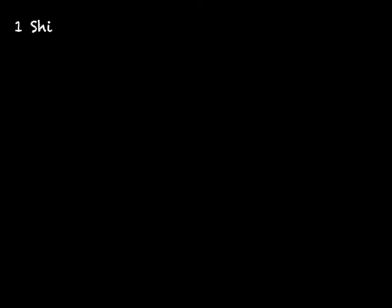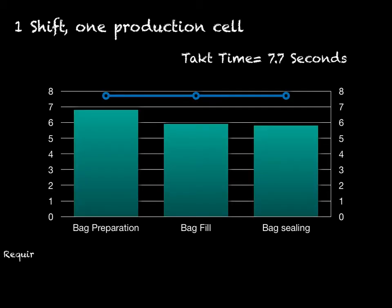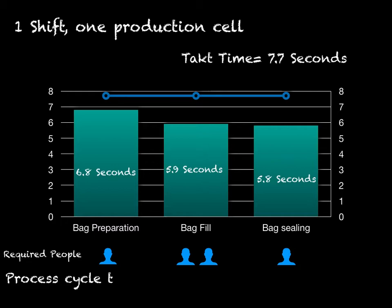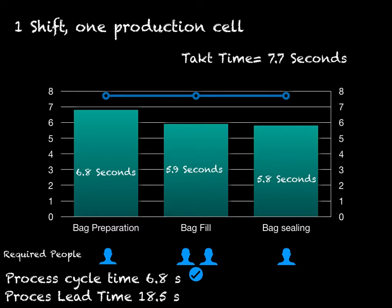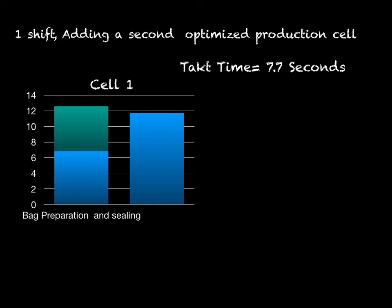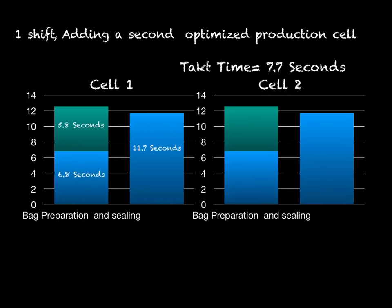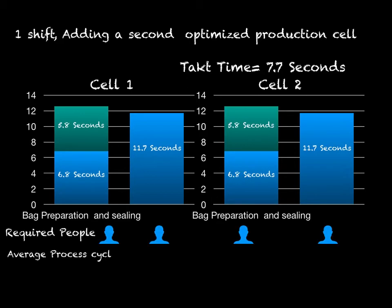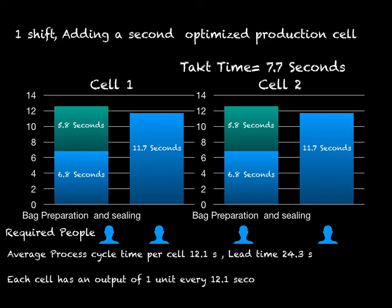Let's take a look at some possible solutions. If we use one production cell and add one more person to the backfill process, we split the time from 11.9 seconds to 5.9 seconds, speeding up the cycle to 6.8 seconds — making this an optimal solution. You need to add one more person, but it meets takt time and lead time. Alternatively, if we use two optimized cells running at the same time, we still need one more person. Each cell produces one output every 12 seconds, but with two cells the overall process yields one output every 6.1 seconds, complying with the required takt time.